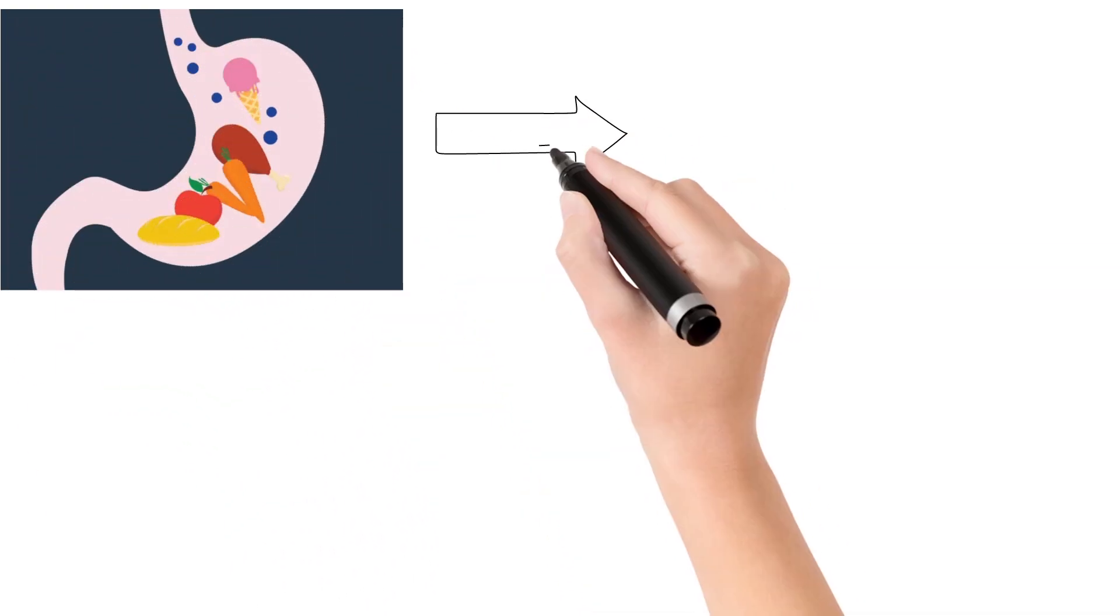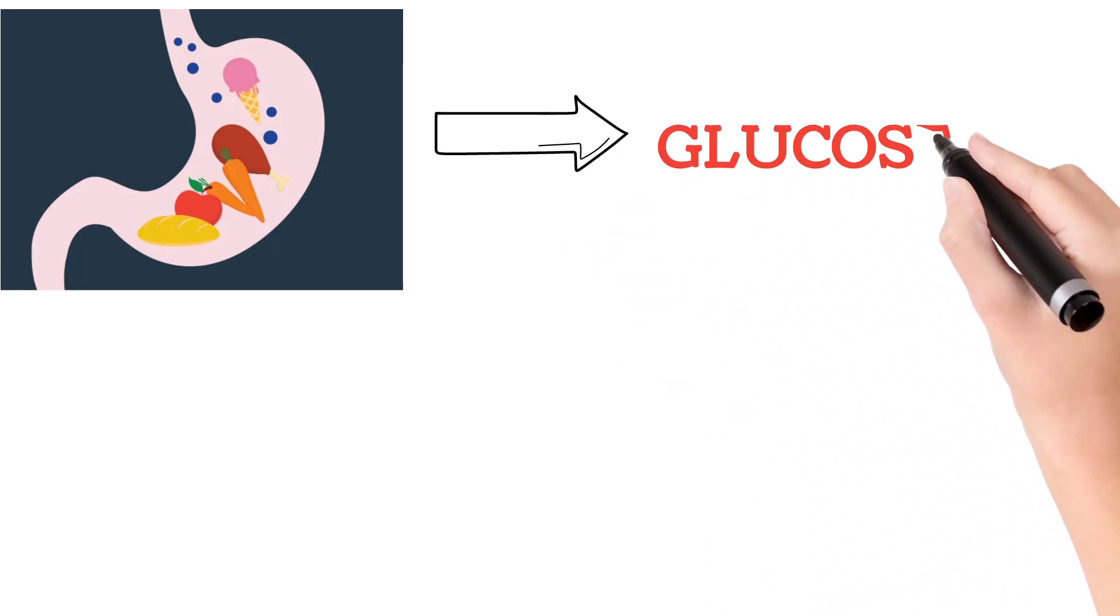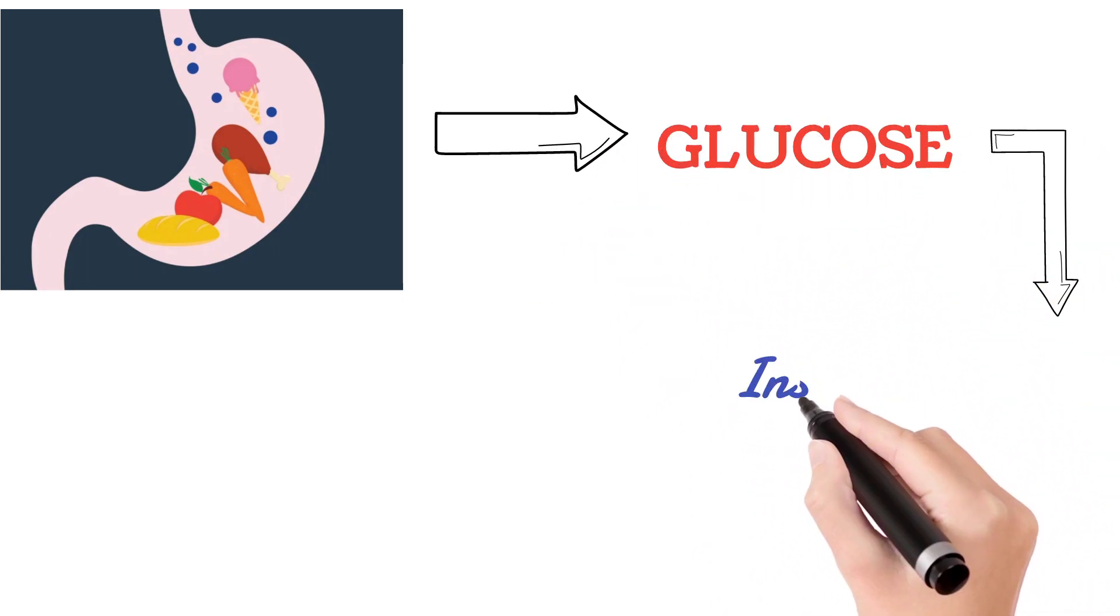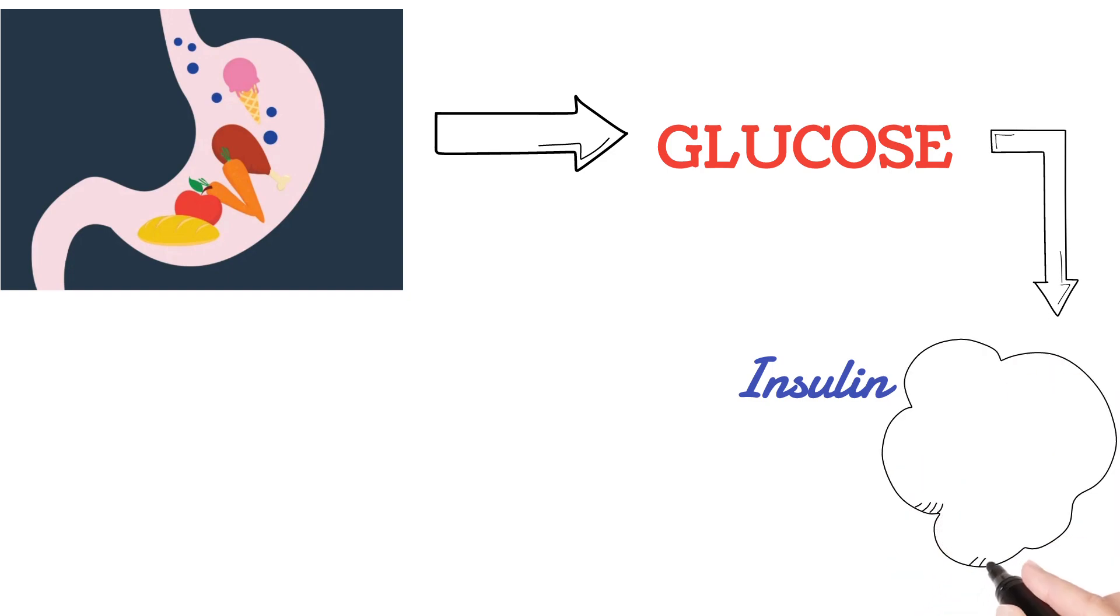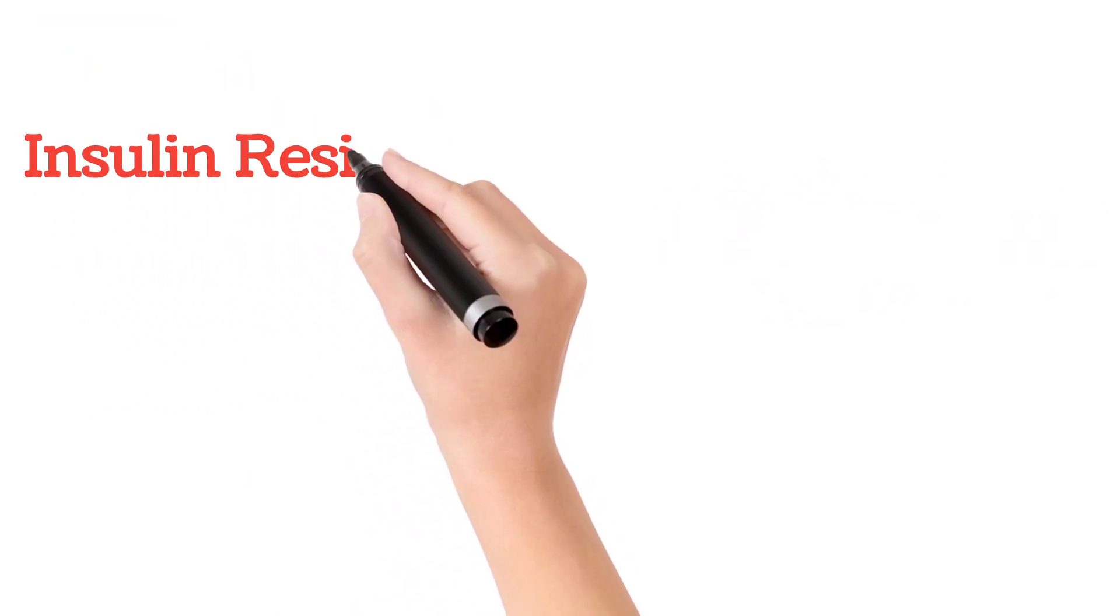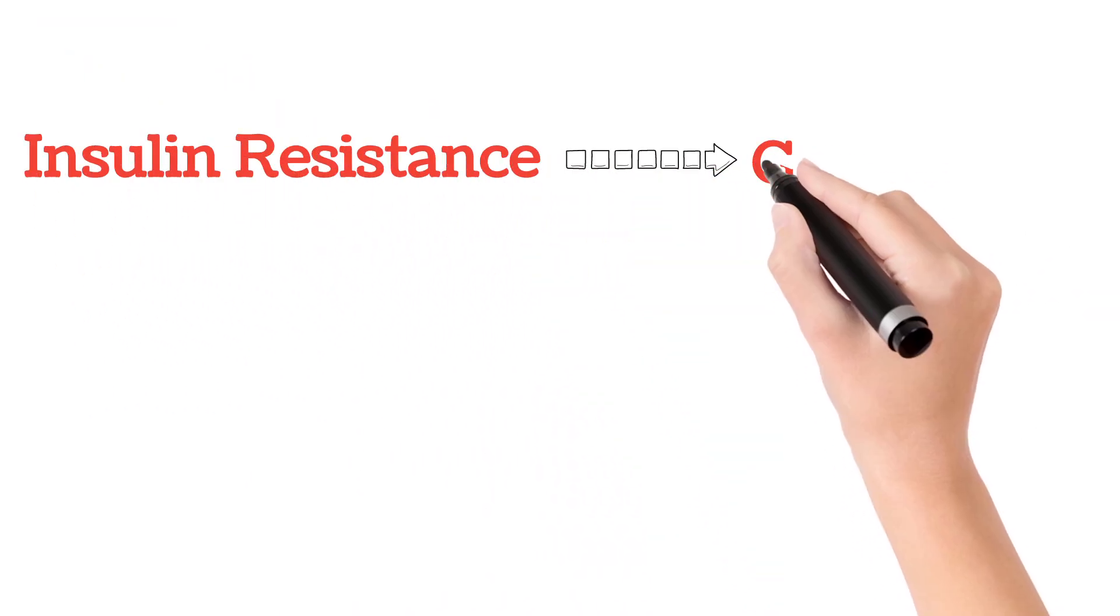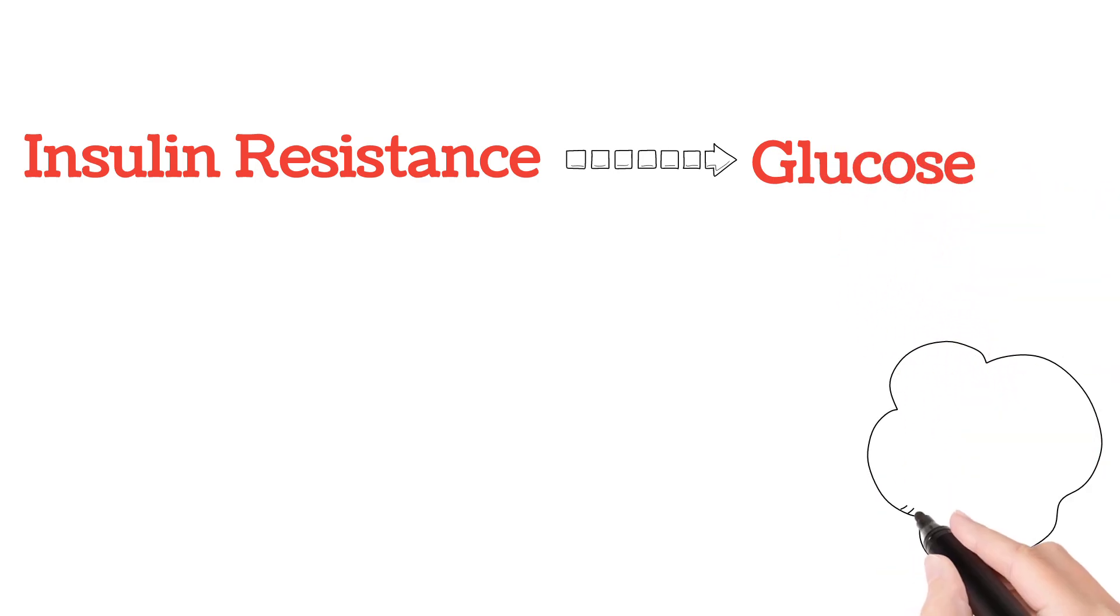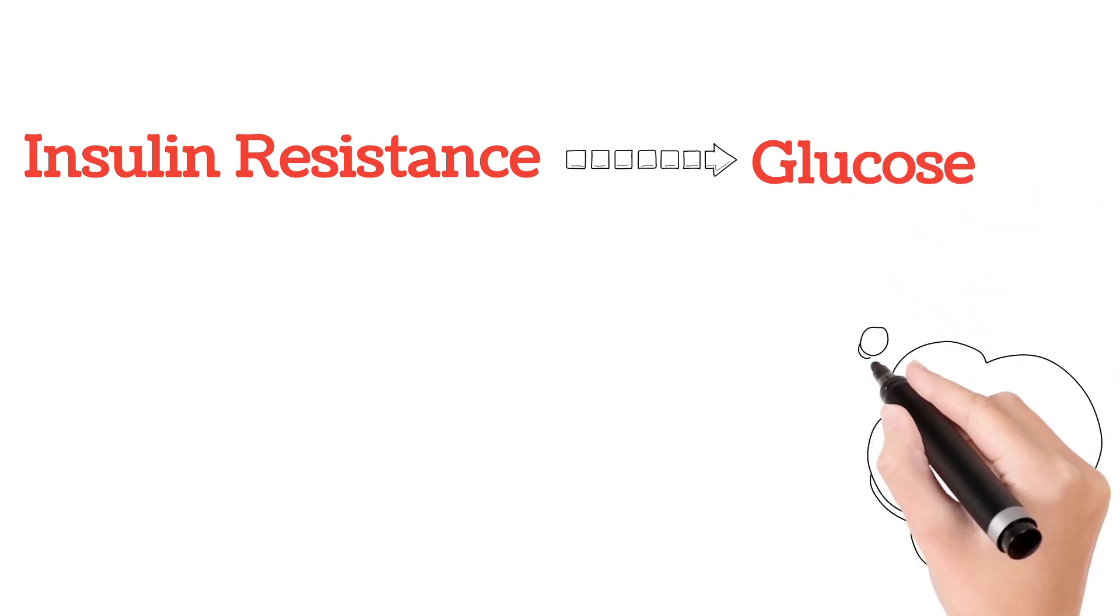If we see these kinds of symptoms, basically whatever food we eat converts into glucose. The glucose, with the help of insulin, enters the cell which helps to give energy. But in certain conditions, insulin doesn't work properly, and because of this, the glucose levels in the blood increase.